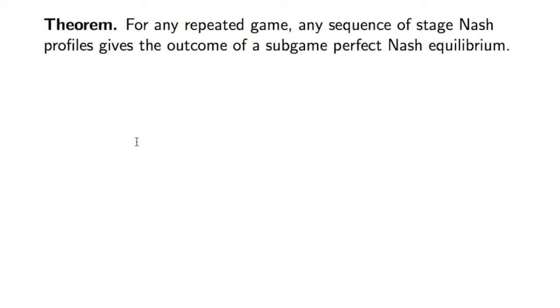You just use backwards induction. The last nodes on the tree would be a stage game. So obviously it's a Nash equilibrium for the stage game, and no player has a reason to deviate, and you can take that way all the way back to the root of the tree.